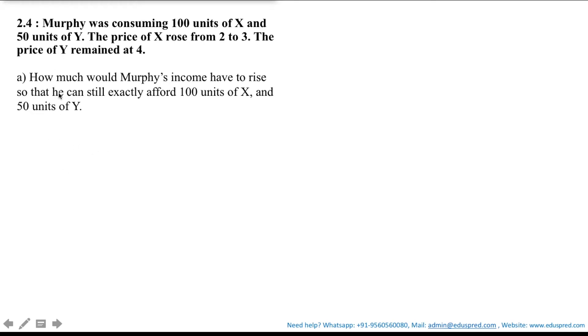The consumption bundle is usually represented as X, Y and this is simply a list of two numbers that tells us how much the consumer is choosing to consume of good X and good Y. In our case it is given that Murphy would consume 100 units of X and 50 units of Y which means the consumption bundle for this particular case is 100, 50.